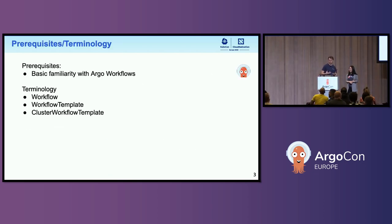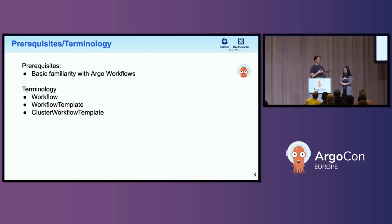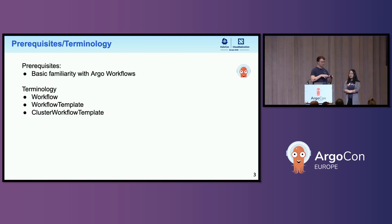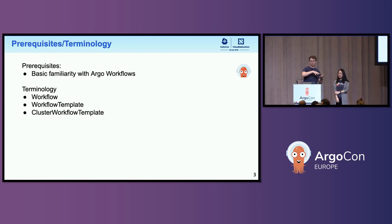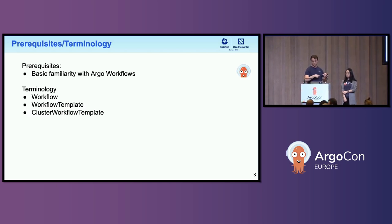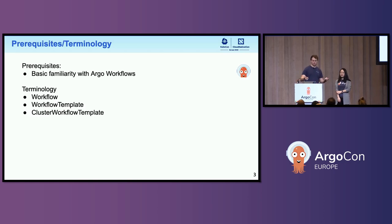In order to get the most out of this talk, you'll need a basic familiarity with Argo workflows. We'll be using a couple different terms. The first is a workflow — a series of steps that either orchestrate different units of work or a unit of work executing within a pod on Kubernetes. The second is a workflow template, which is a way to factor out sections of a workflow and reuse them across multiple workflows, scoped to a given namespace. A cluster workflow template is the same thing, but scoped to a cluster.